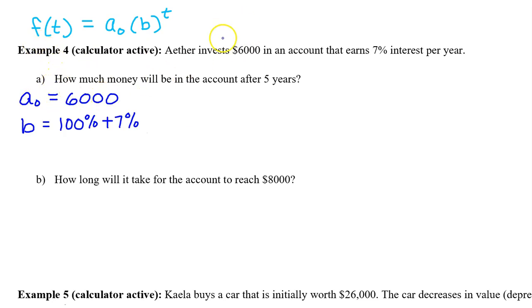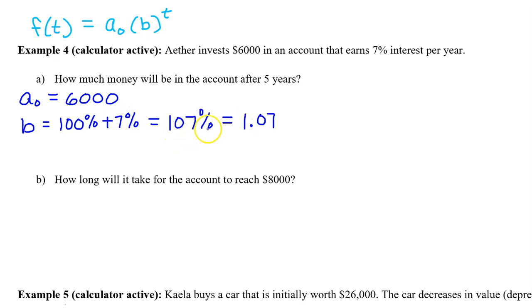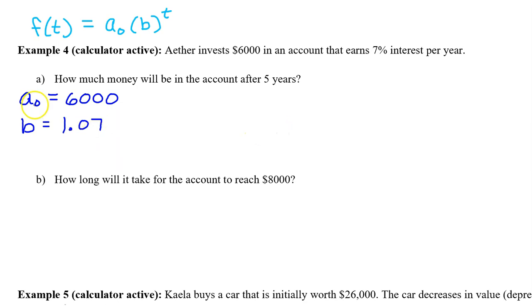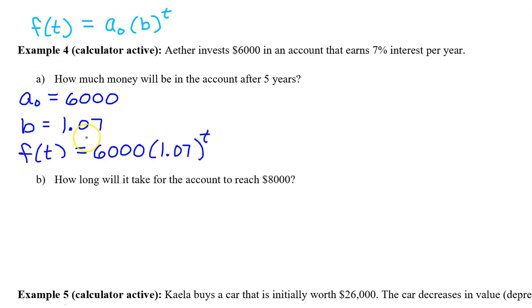In this case, a-zero is the initial amount of $6,000. Since the account is increasing by 7% each year, we can find b by adding 100% plus 7%. That's 107%, which is equivalent to 1.07. For the growth factor, always use the decimal form as opposed to the percent. Putting it all together, the value of Ether's account after t years can be modeled by 6,000 times 1.07 to the t power.